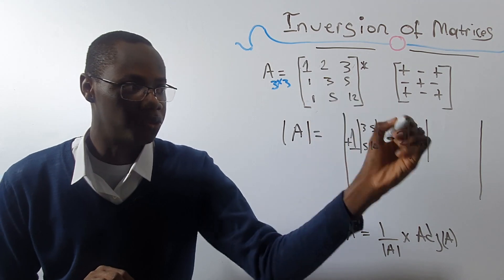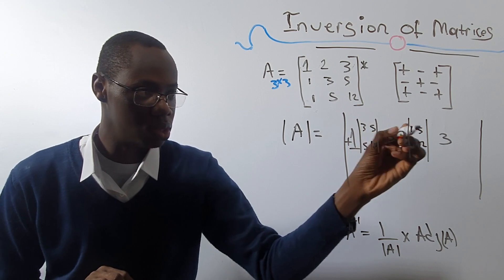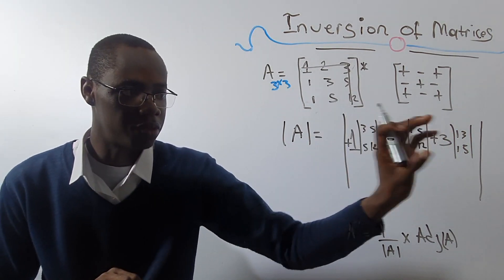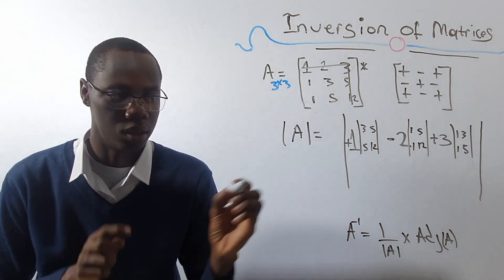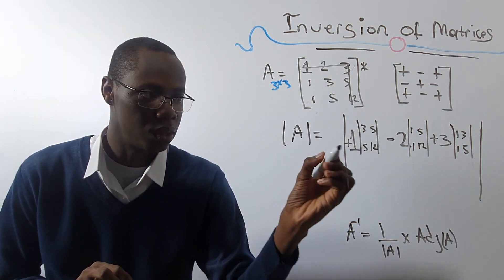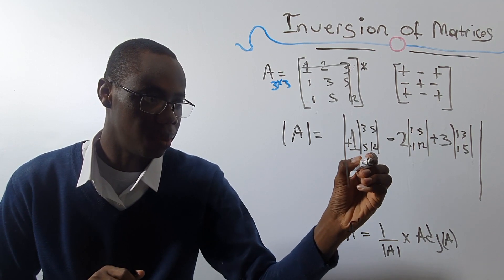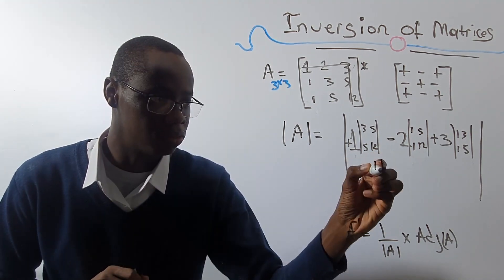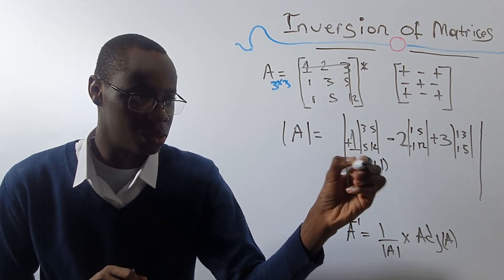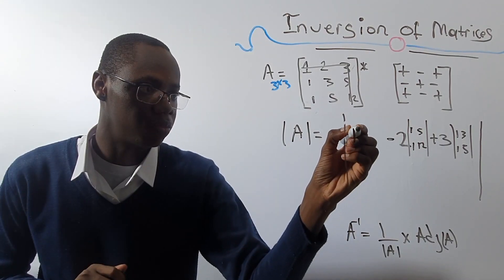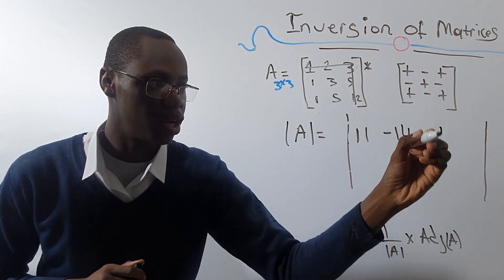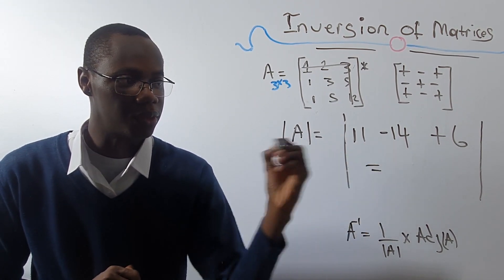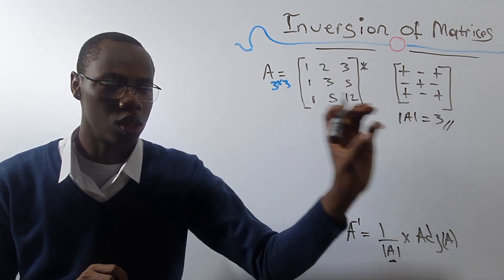Now we have everything in place. All we need to do is break this down like we find the determinant of a 2 by 2. So 12 times 3 is 36 minus 5 times 5 which is 25 — subtract that — giving 11. The cofactor multiplied by plus 1 gives the answer of 11 here. Similarly doing the other terms: we get plus 11, and plus 6. The determinant equals 11 minus 14 plus 6. We have finally gotten our determinant.